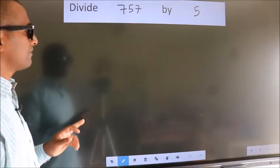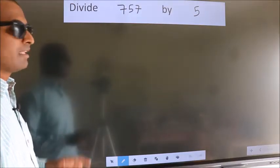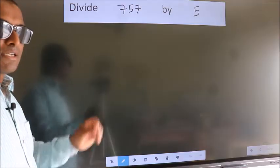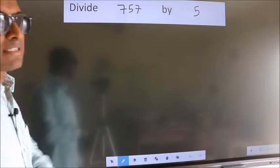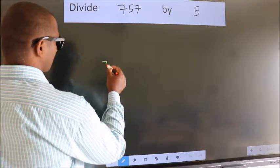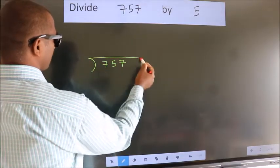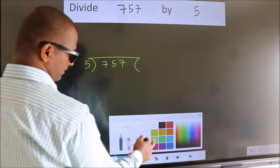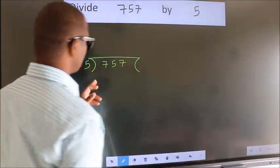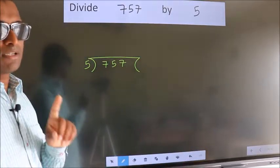Divide 757 by 5. To do this division, we should frame it in this way. 757 here, 5 here. This is your step 1.